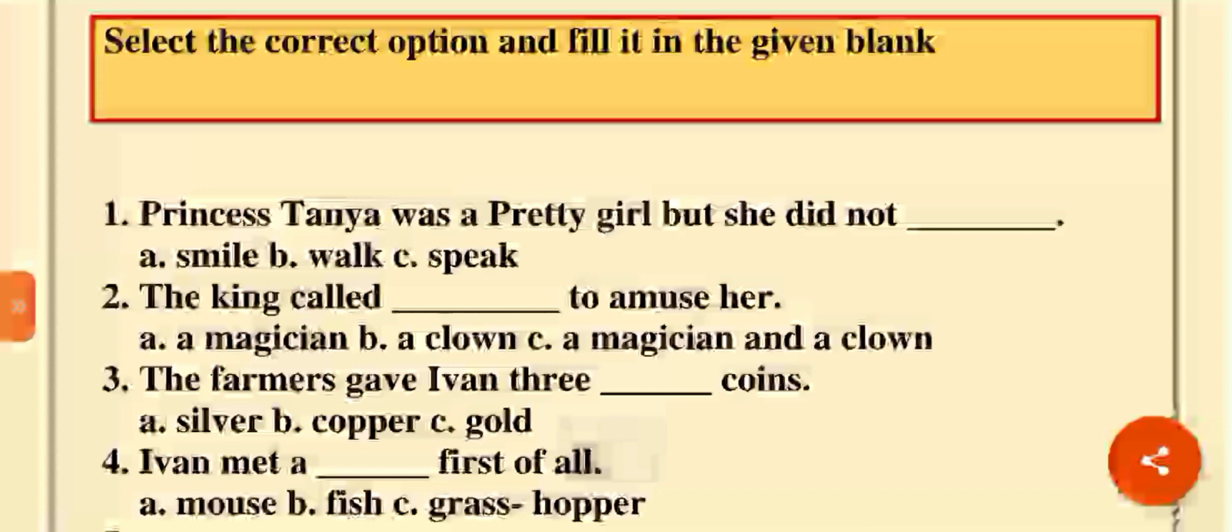Number 2. The king called dash to amuse her. King ne khi kittau nho khush karan dhe lahi? Ki nho bulaya? Magician nho bulaya? Clown nho bulaya? Ja, dho na nho bulaya? Magician and clown. Ta answer kiya C. Usne magician nho bhi bulaya se, clown nho bhi bulaya se. Islilie answer kiya C.